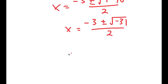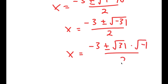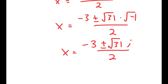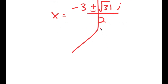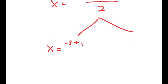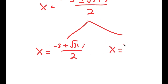The square root of negative 31 is the same thing as the square root of 31 times the square root of negative 1. As you may know, the square root of negative 1 is equal to i. So I get negative 3 plus or minus the square root of 31 times i, all over 2. This gives two solutions: x equals negative 3 plus the square root of 31 i over 2, and x equals negative 3 minus the square root of 31 i over 2.